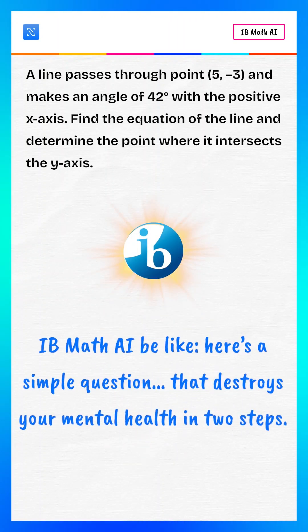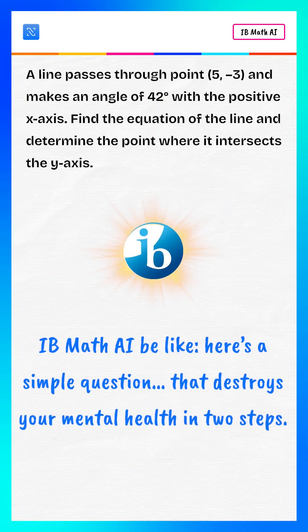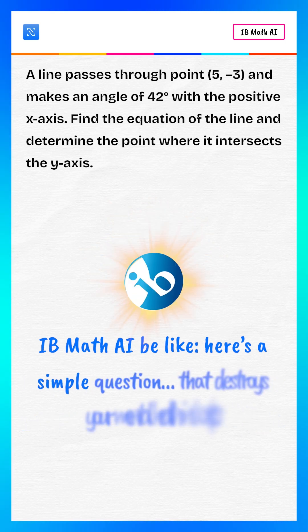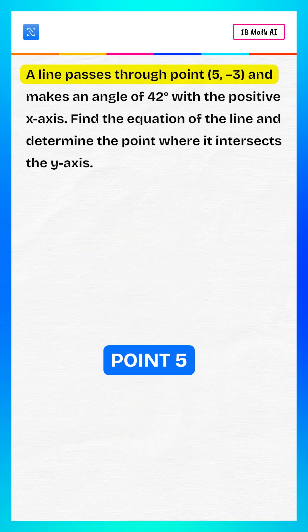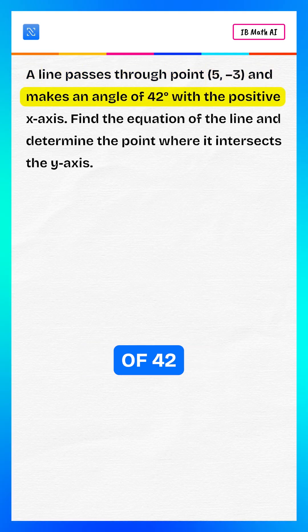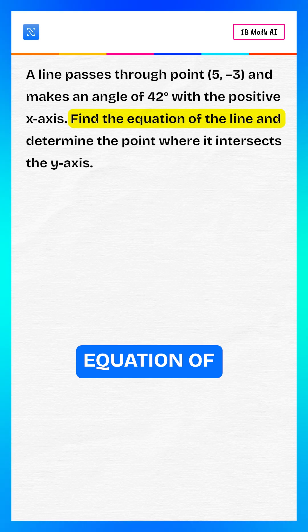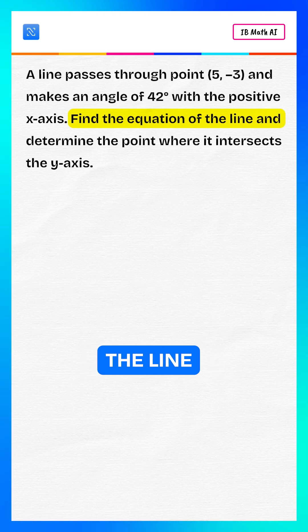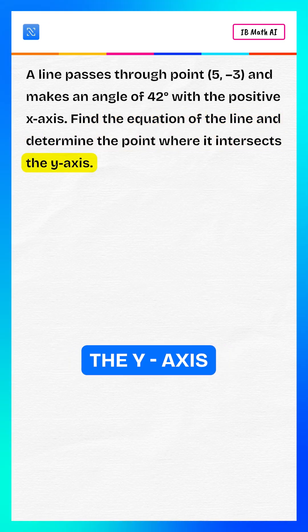IB Math AI be like: here's a simple question that destroys your mental health in two steps. A line passes through a point and makes an angle of 42 degrees with the positive x-axis. Find the equation of the line and determine the point where it intersects the y-axis.